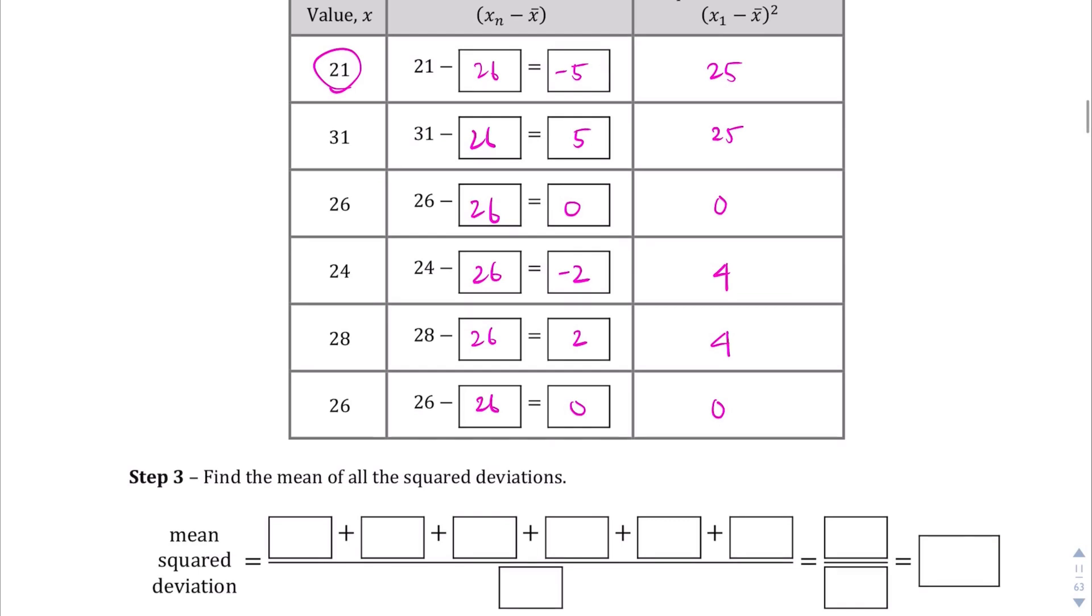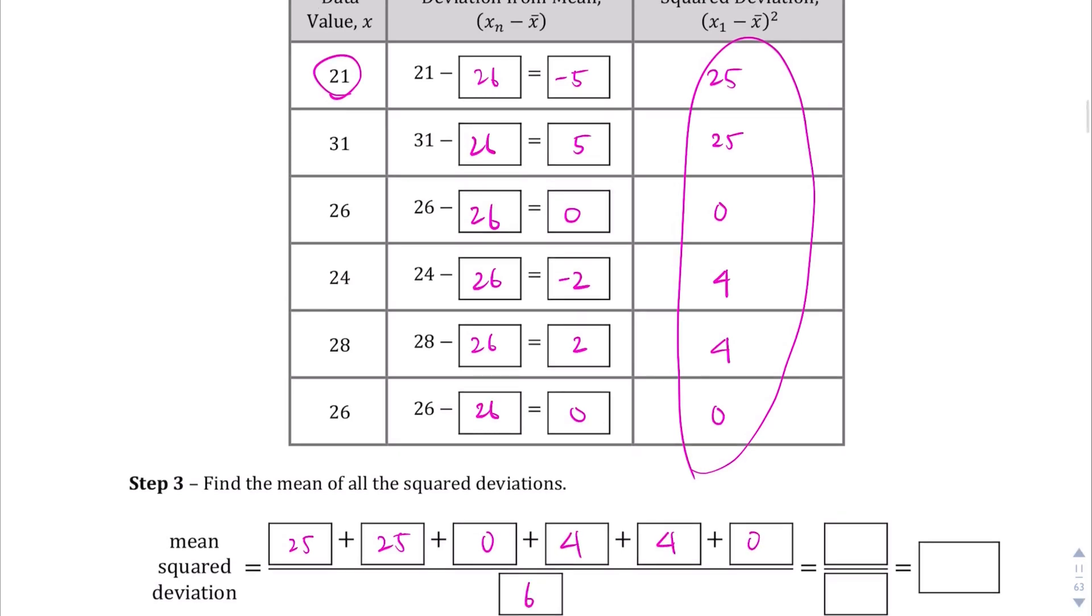So, we're going to find the mean of all the squared deviations. So, all these numbers right here, we're going to find the mean of those now. So, 25 plus 25 plus 0 plus 4 plus 4 plus 0 divided by the number of items is 6.